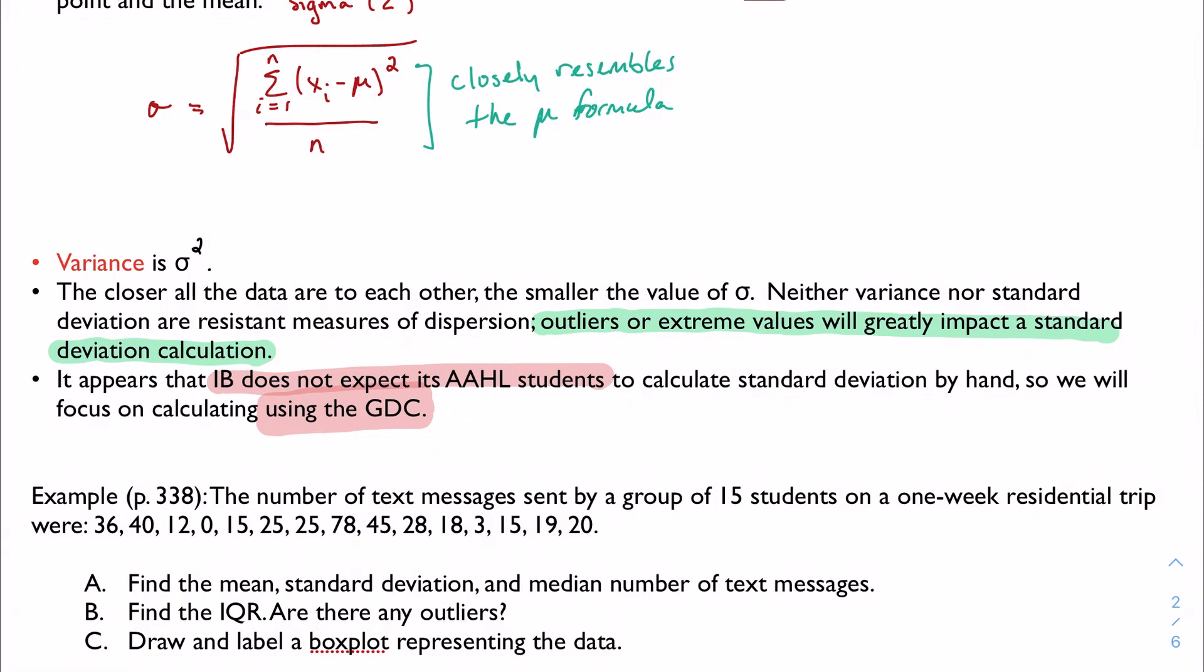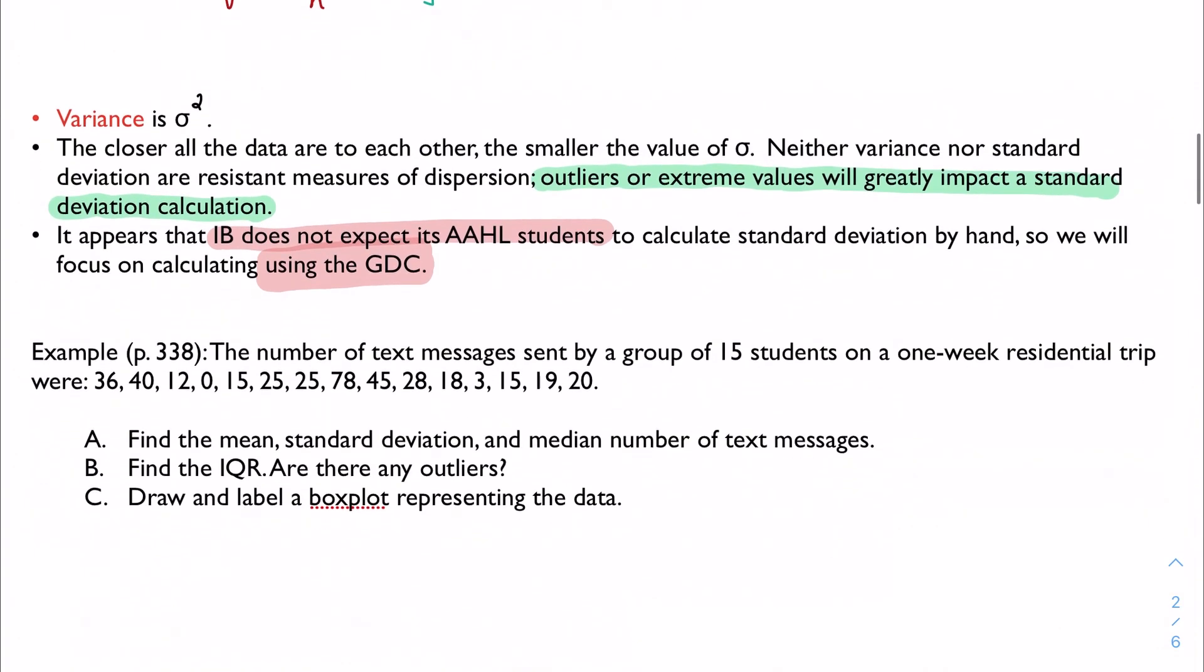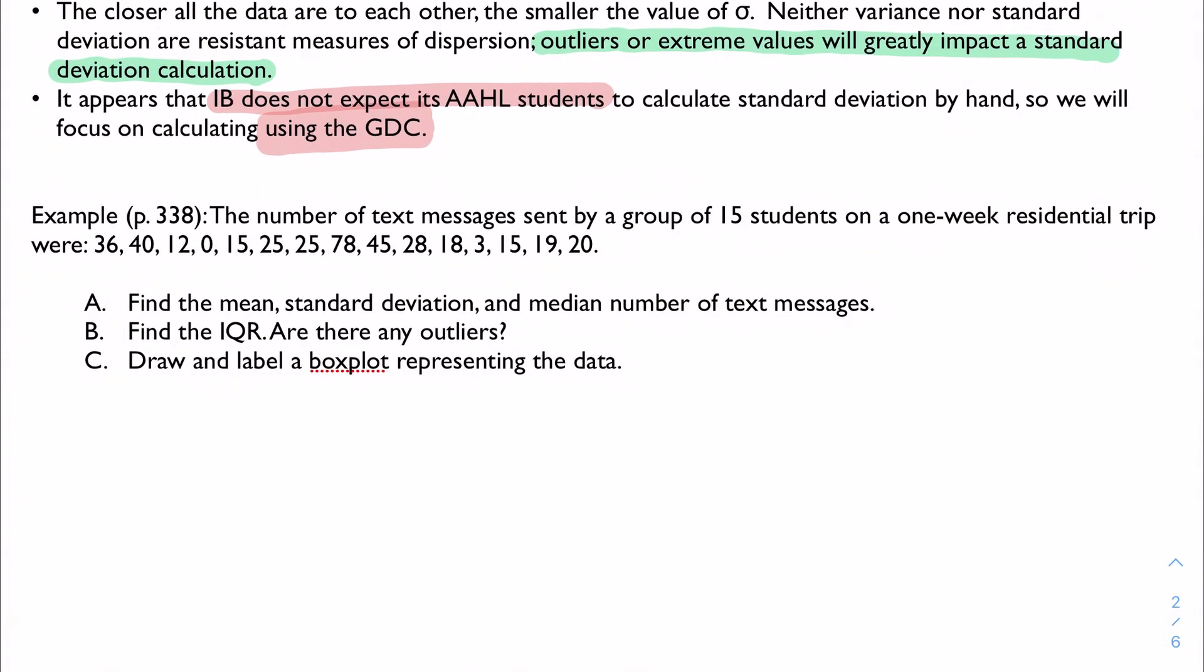If I have any outliers in there at all, it's going to make my standard deviation really spike. And that can be difficult when you're interpreting a set of data. So again, we should be able to hopefully focus on just doing this by GDC, not by hand.